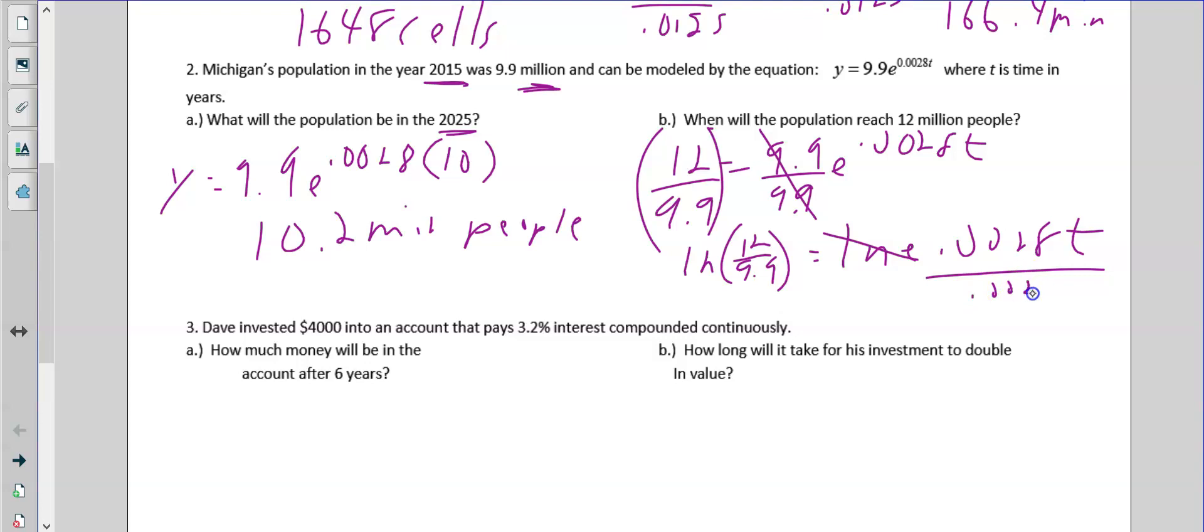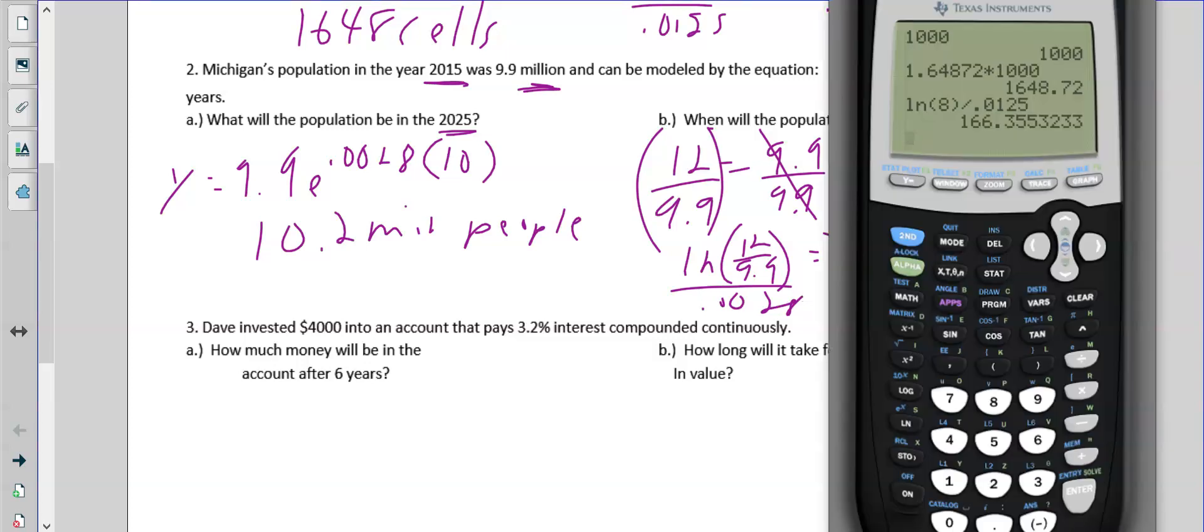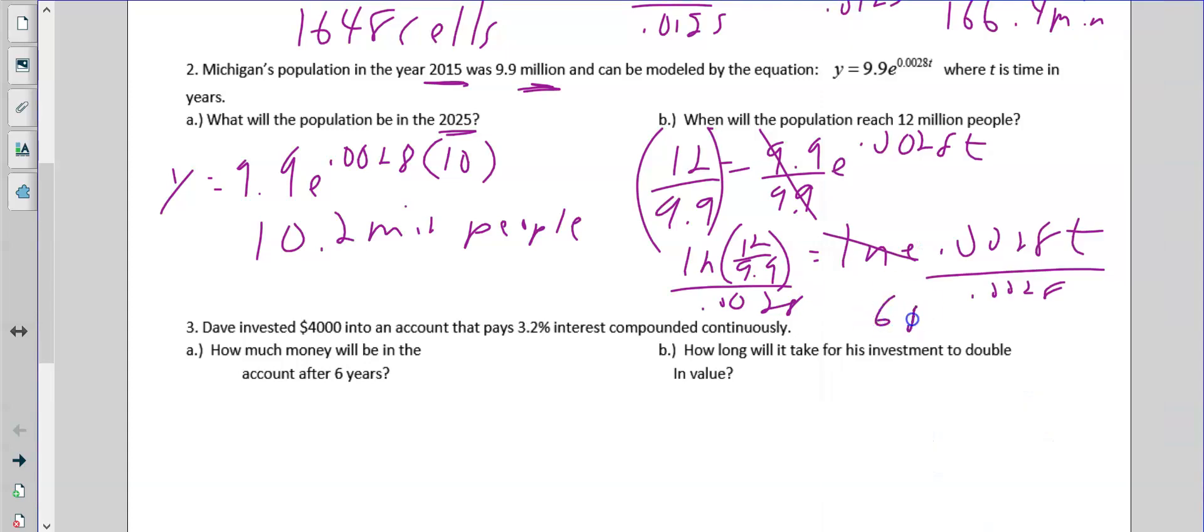And you're going to divide by 0.0028. And you can actually just type that all in: ln 12 divided by 9.9, get that number, and then divide by 0.028. Just realized the side error. The other zero didn't pull up, so it's supposed to be 0.0028, which would have made it 68.7 years.